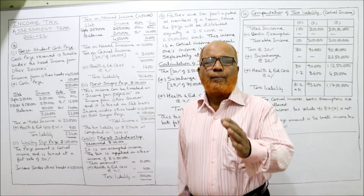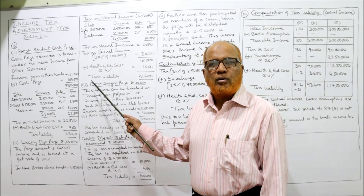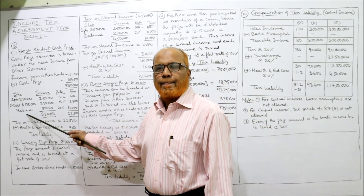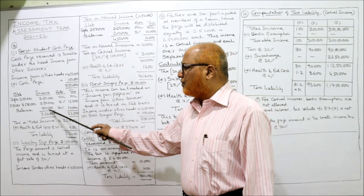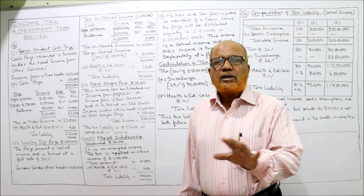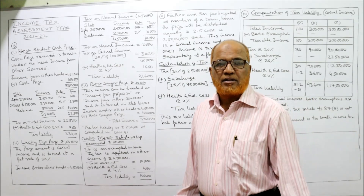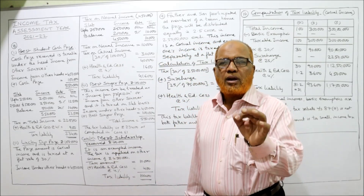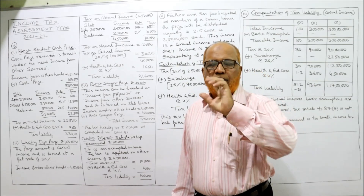The third slab goes from 5,00,001 to 10,00,000, but our income is only 5,50,000, so the balance is 50,000 at 20%, giving tax of 10,000. Total tax = 12,500 + 10,000 = 22,500. No tax rebate because total income is above 5,00,000. Adding health and education cess at 4%, tax liability = 23,400. Situation 1 completed.